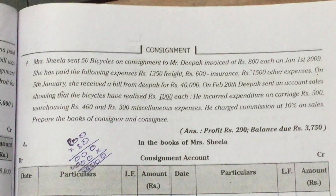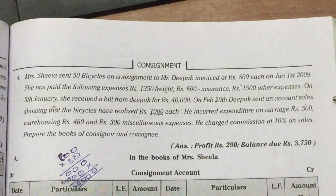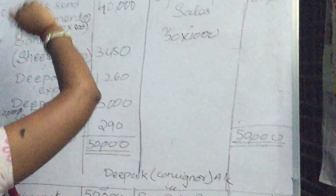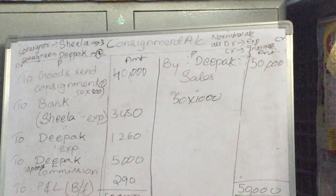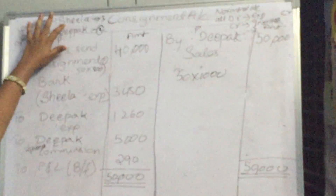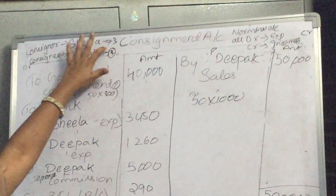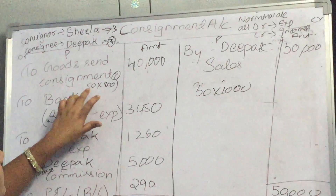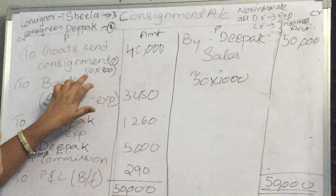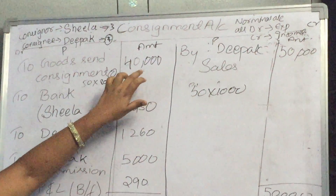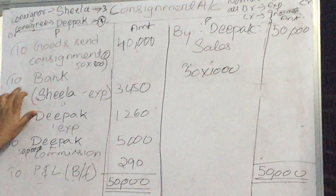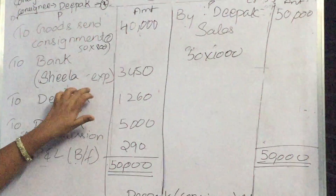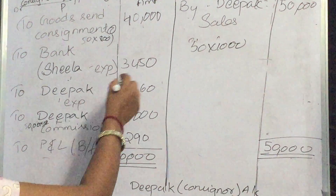These ledger accounts we'll be explaining on the board. First, you should write ledger accounts in the books of the consignor — Sheila. With Sheila, you'll be having three accounts. The first one is goods sent on consignment — 15 into 800, then you'll get 40,000. Next, two bank — Sheila's expenses. All the expenses you should sum up and take it in.